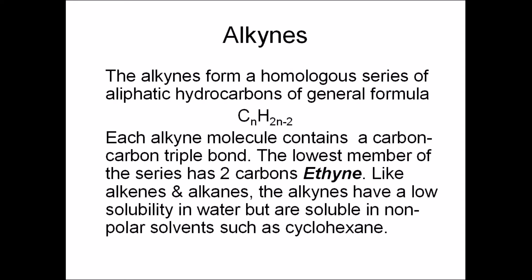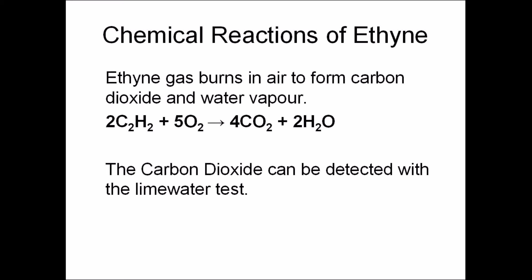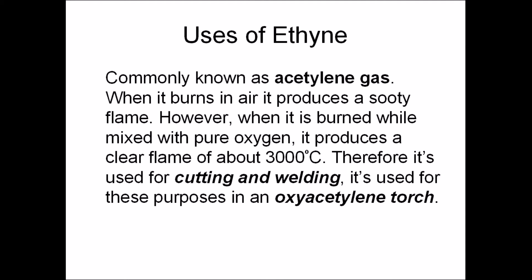Now for alkynes, our final homologous series. These have the general formula CnH₂n₋₂. They always have a triple bond and their smallest member is ethyne. Like most hydrocarbons, ethyne gas burns in air to form CO₂ and water vapor. Ethyne is also called acetylene gas and it's used in instruments like the oxyacetylene torch for cutting and welding.